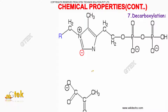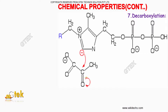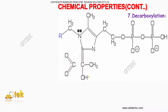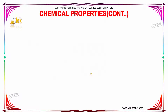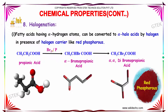This is the general formation of the decarboxylation process. Halogenation: fatty acids having alpha hydrogen atoms can be converted to alpha-halo acids by halogen in the presence of a halogen carrier like red phosphorus. Propanoic acid in the presence of bromine and phosphorus forms alpha-bromopropanoic acid and also alpha,alpha-dibromopropanoic acid.